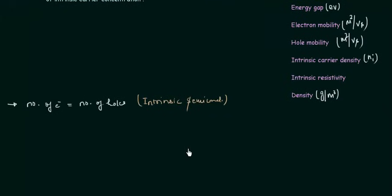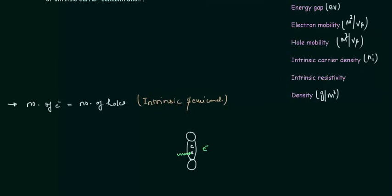Let us consider a covalent bond. These are two atoms and there is a covalent bond between them with two electrons. Let us say I want to knock out this electron out of this covalent bond. I will give some energy to this electron and after this the electron will be available outside this covalent bond, moving freely in the lattice and contributing to the conduction. When this electron leaves the covalent bond we have a hole at this point. So I have created one hole and also one free electron, which means the number of holes is the same as the number of electrons in case of intrinsic semiconductor.